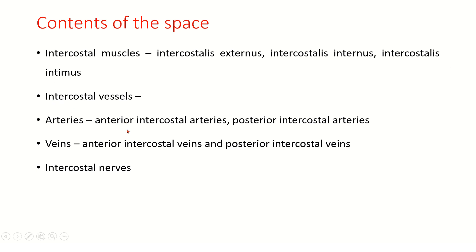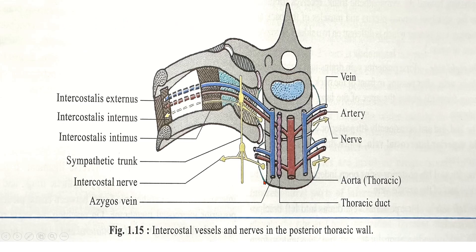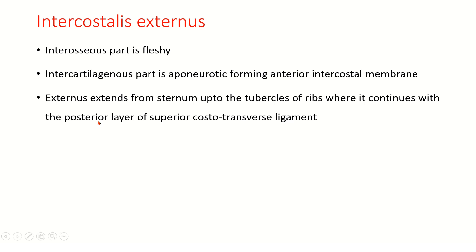The contents of the intercostal space include anterior and posterior intercostal arteries, anterior and posterior intercostal veins, and intercostal nerves. In the diagram, the posterior intercostal vein is at the top, then the artery, and then the nerve below. They pass between the intercostalis internus and intimus within the costal groove.